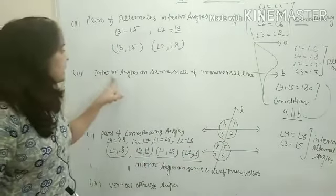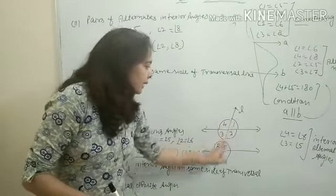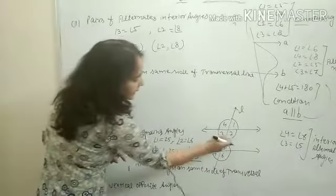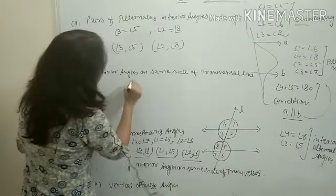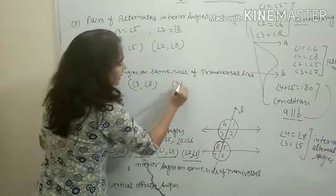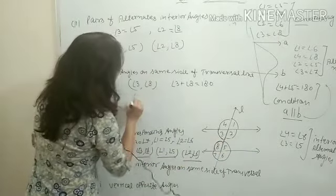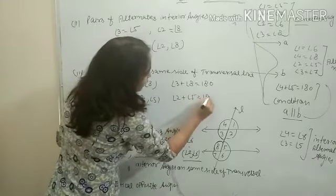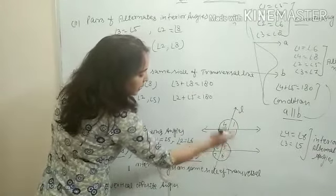Next: interior angles on the same side of the transversal line। Transversal line की एक side पर angle 3 और angle 8 हैं — पहला pair। इनका sum 180 है। Other side पर angle 2 and angle 5 — इनका sum भी 180 है। Pair of interior angles on the same side of the transversal line।